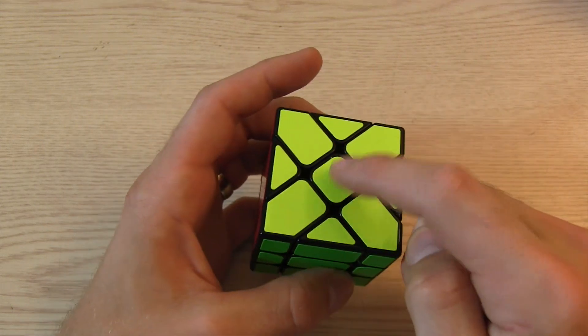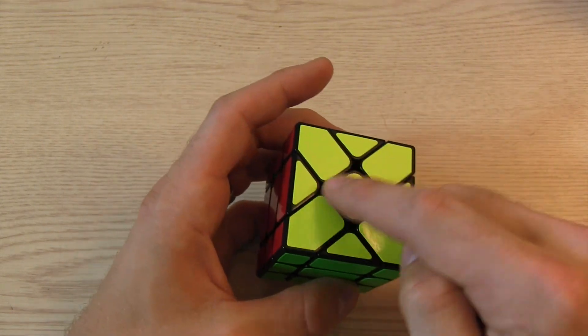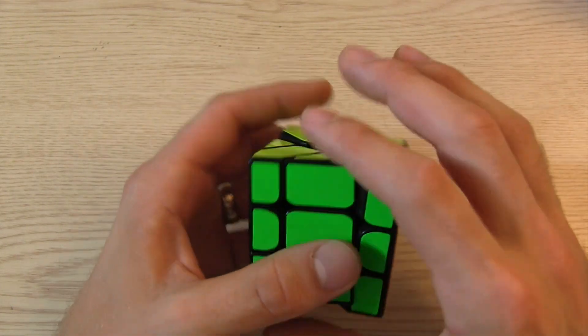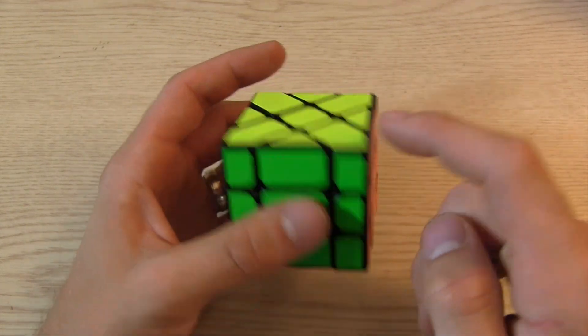But that's because this center is turned as well. And this center could be turned 90 degrees, 180 degrees, and you can't really tell. So you can use these as sort of buffer pieces to fix any issues here.